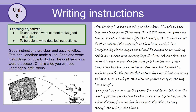These instructions aren't very good. They're written in paragraphs rather than bullet points or numbered steps, making them hard to follow. There are some interesting facts, but you don't need the history of kites in instructions for how to make one. It reads more like a story about how Jonathan made his kite, which doesn't help someone else make their own. There's no clear equipment list and no title.